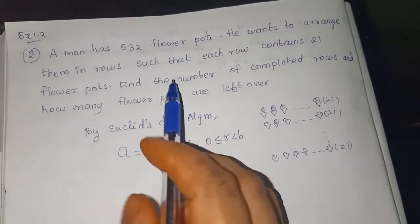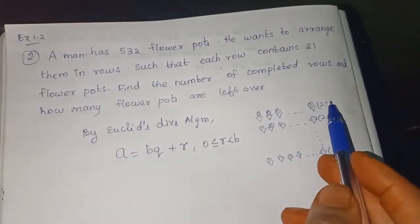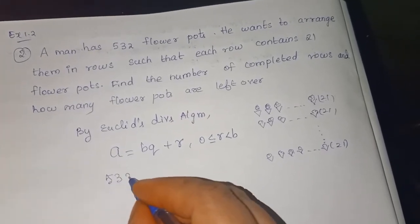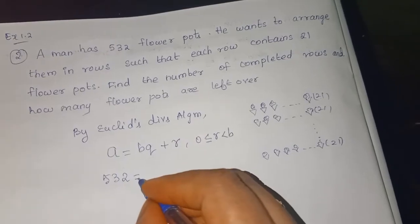What is A here? 532 flower parts. He has totally 532 flower parts. 532 can relate with the dividend. You are going to divide this.